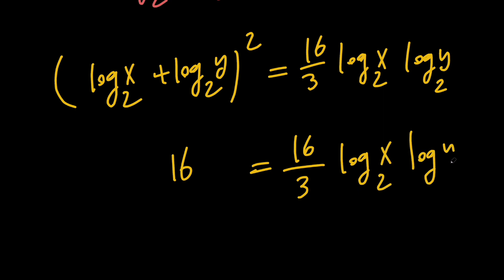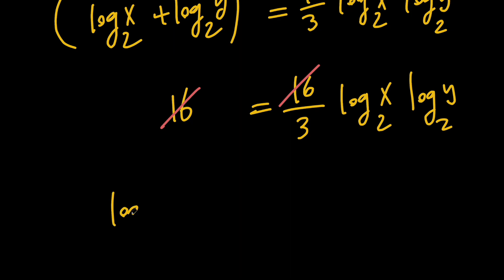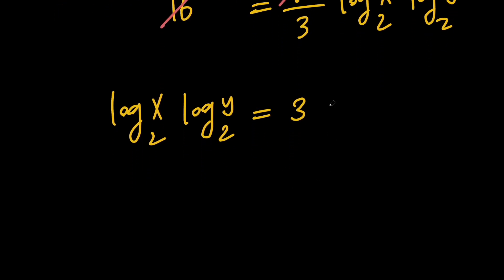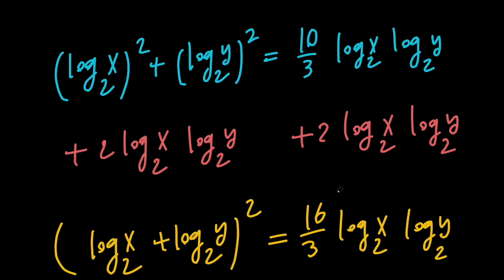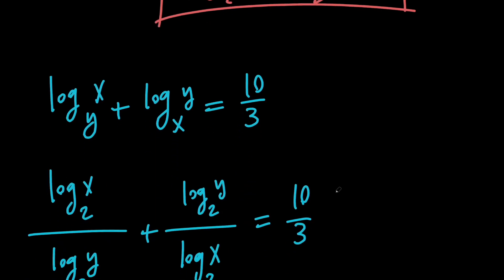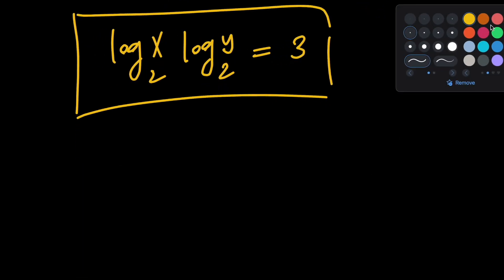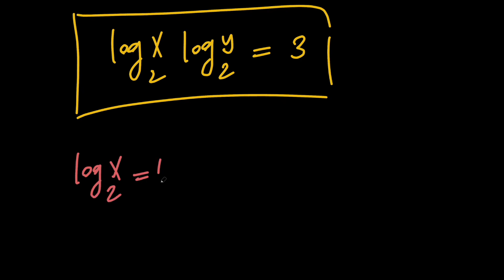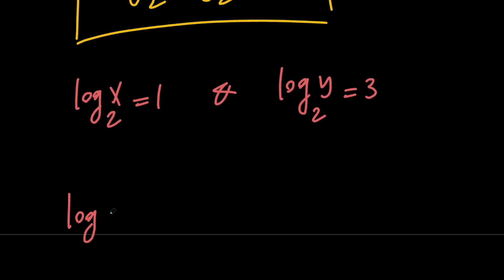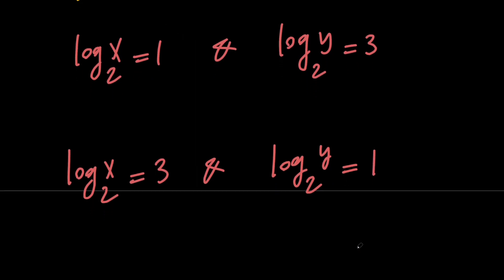From this I can go ahead and cancel the 16s, and we're going to have log x with base 2 times log y with base 2 equals 3. So the product of these two logs is 3, and as we said before their sum is 4. So we can say that one of them has to be 1 and the other one has to be 3. We have two cases: either log x with base 2 equals 1 and log y with base 2 equals 3, or log x with base 2 equals 3 and log y with base 2 equals 1.